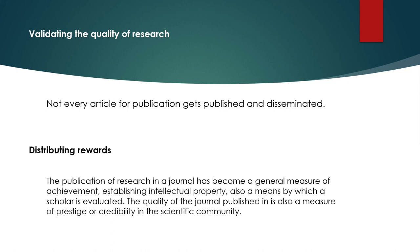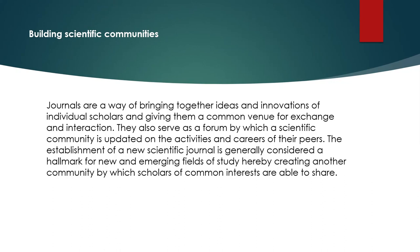Journals also serve as a reward system in scientific communities. In a field where new discoveries are made every day, publication in a journal has become a measure of achievement, helping establish intellectual property and serving as a means by which a scholar is evaluated. Aside from the number of articles published, the quality of the journal is also a measure of prestige or credibility. Lastly, journals help build scientific communities by bringing together ideas and innovations of individual scholars, serving as a forum by which the scientific community is updated on activities and the careers of their peers. The establishment of a new scientific journal is generally considered a hallmark for new emerging fields of study, creating communities where scholars of common interests can share.